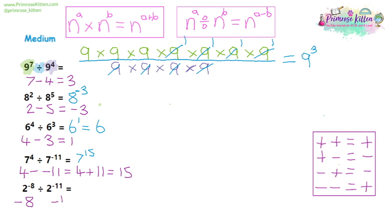Last one for this level: we have two to the minus eight divided by two to the minus 11. Looking at our rules, that gives us minus eight minus minus 11, which tidied up is minus eight plus 11. Minus eight plus 11 gives us an overall answer of three, meaning the answer is two to the power of three.